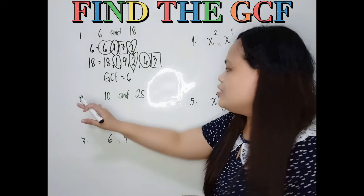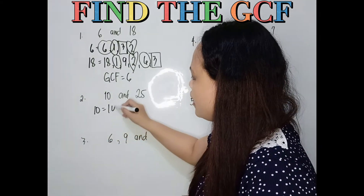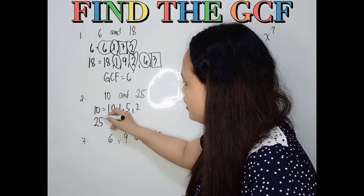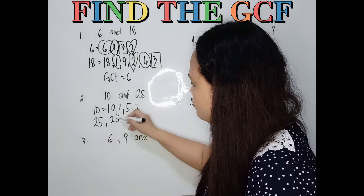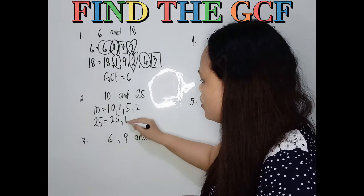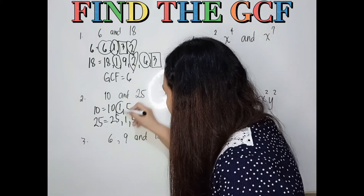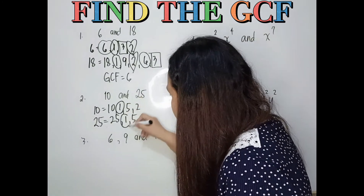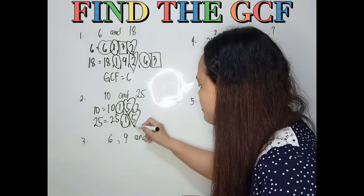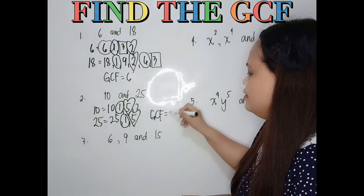Next, 10 and 25. What are the factors of 10? We have 10 times 1 and 5 times 2. For 25, we have 25 times 1 and 5 times 5. Common factors are 1 and 5. But we have to get the greatest, and that is 5. So the GCF is 5.